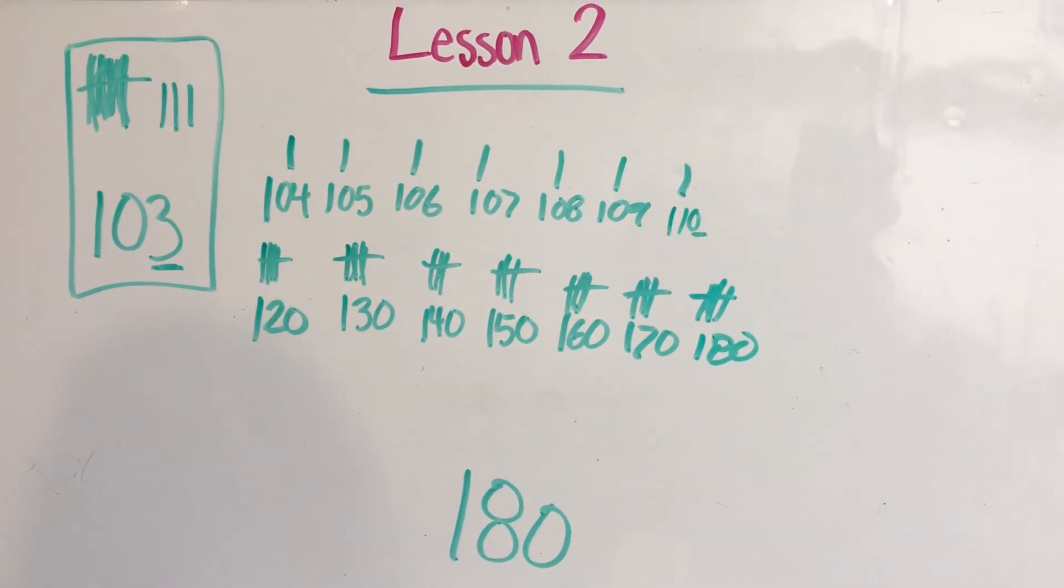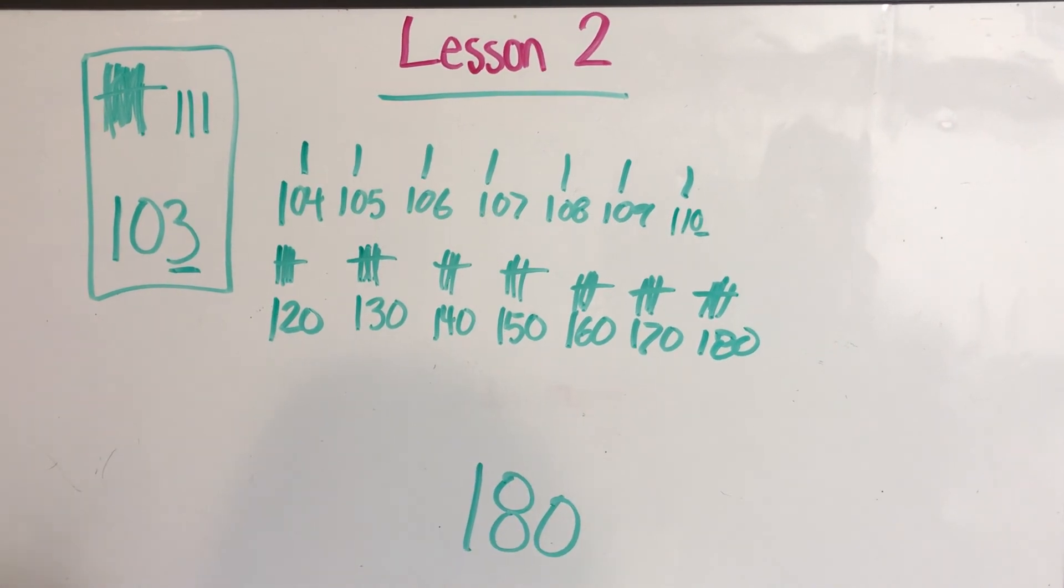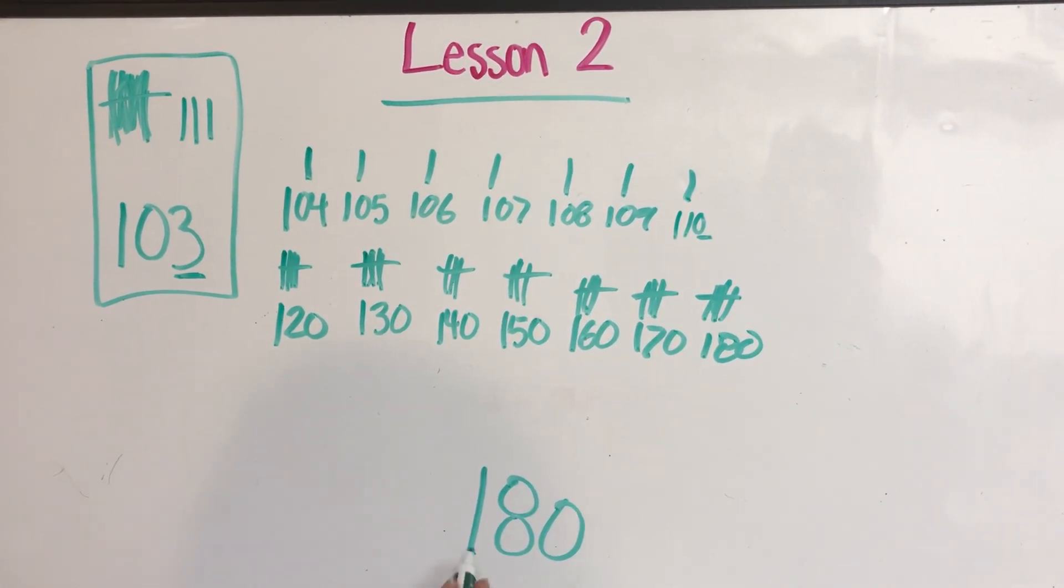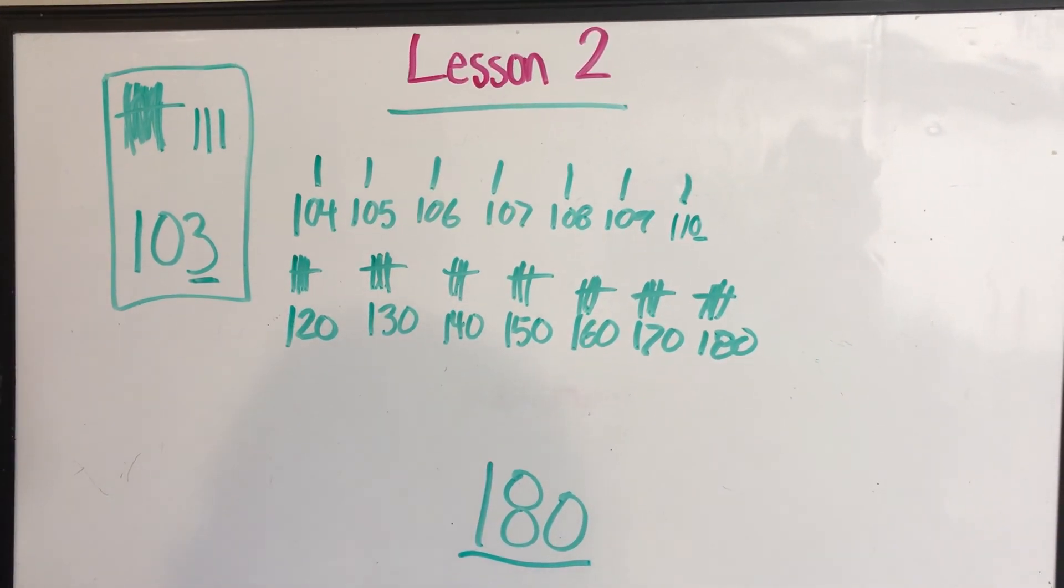So this is what it would look like if your student was asked to draw a label in box 103, and then draw pictures to count up to 180. If you want to pause here and write this down, you're welcome to.